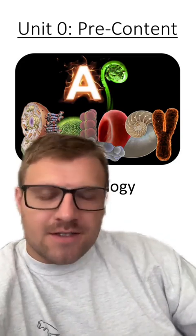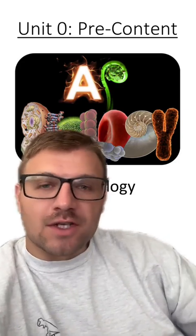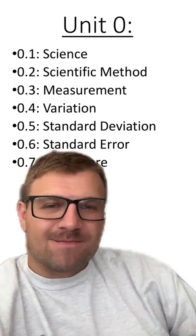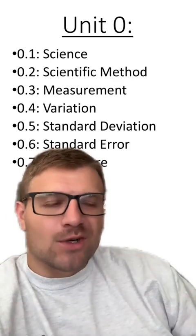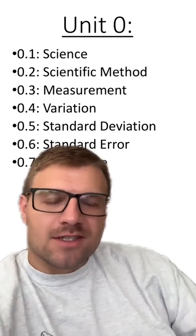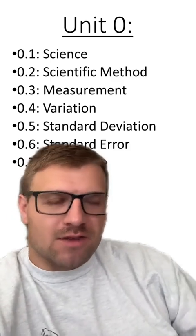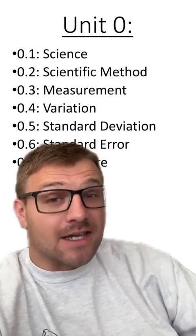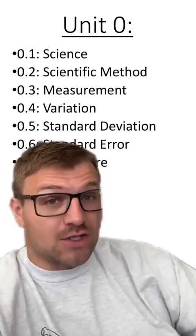Let's get into our fifth section of unit zero for AP Biology. In this section, we're going to go over something called standard deviation, which deals a lot with what we talked about in the last section, which is variation.